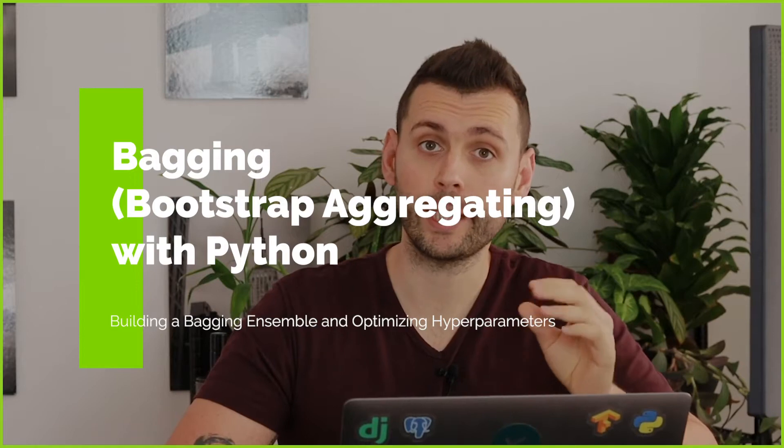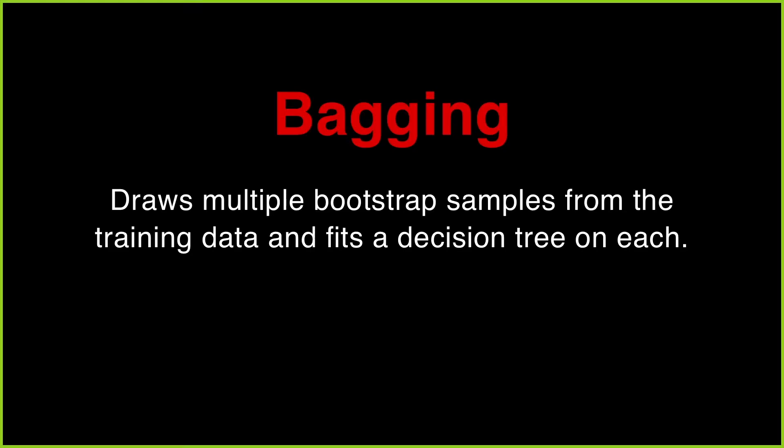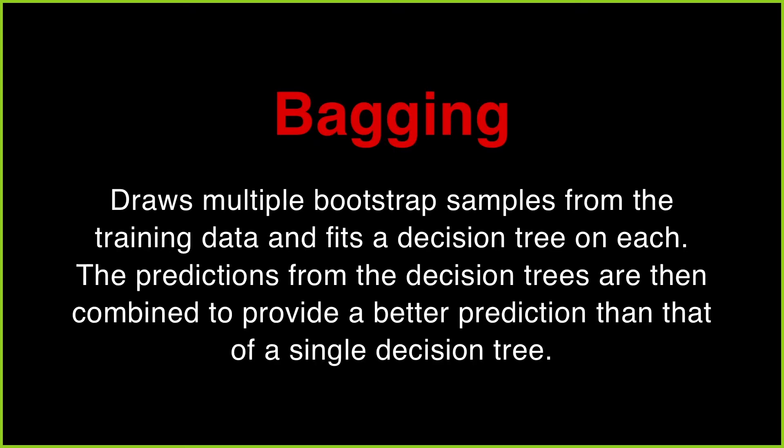In this video I want to talk about bagging as an ensemble machine learning algorithm. We're going to see how we can tweak certain hyperparameters — for example, the number of decision trees and the maximum samples — in order to achieve better model performance. Bagging combines the predictions of multiple decision trees by drawing multiple bootstrap samples from the training data, fitting a decision tree on each, and combining predictions for a more accurate result than a single decision tree.